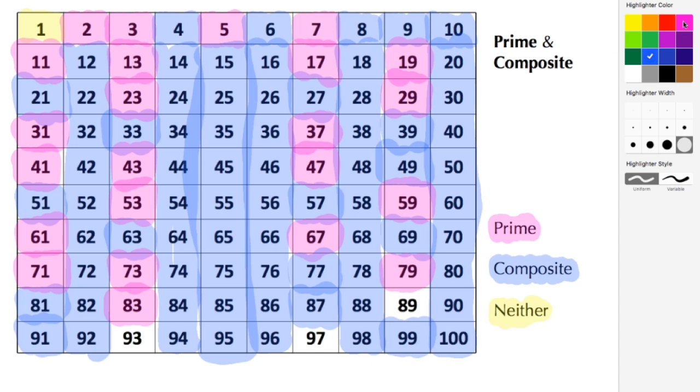89 is prime. And 93, 9 plus 3 is 12, so 12 can be divided by 3, so that there is also composite. And last but not least is number 97, and number 97 is prime.